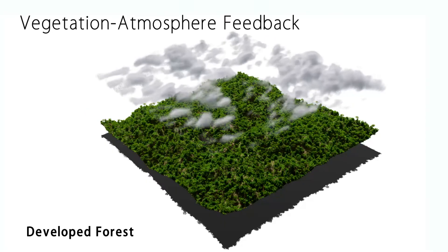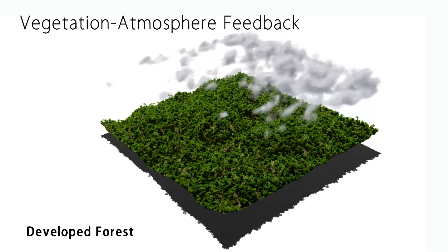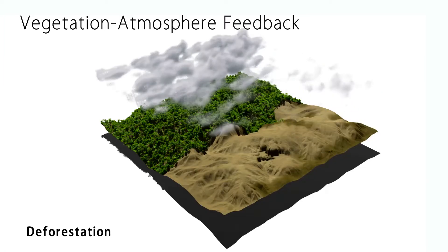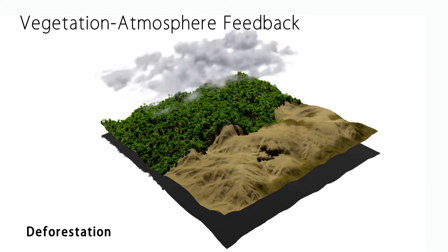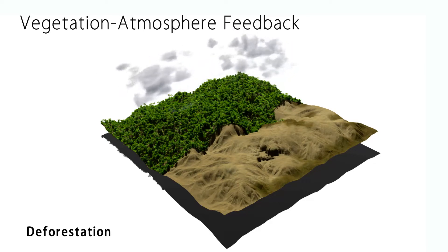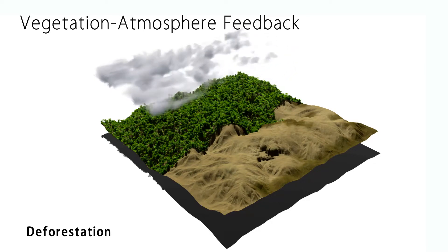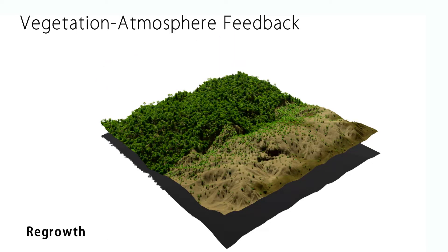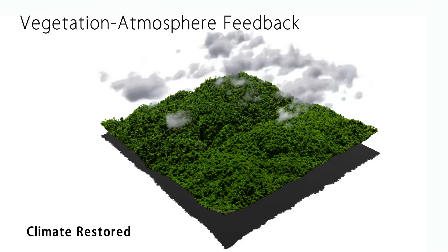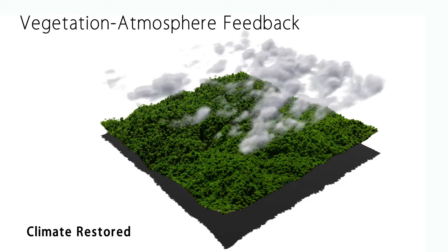In our model we couple vegetation and atmosphere by simulating the water cycle. In this rainforest scene we clear an area of the vegetation during simulation. After the deforestation, clouds form only above the rainforest region. Then we continue vegetation growth until the eco-climate is restored. This shows the interconnection between vegetation and atmosphere.